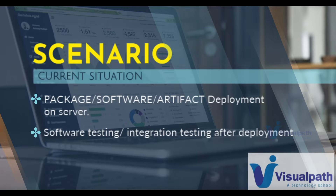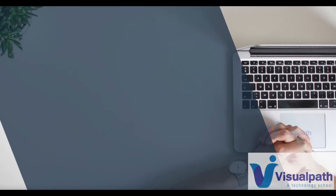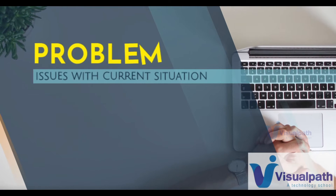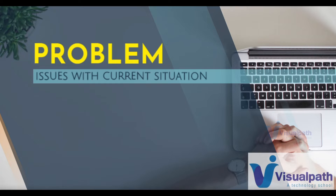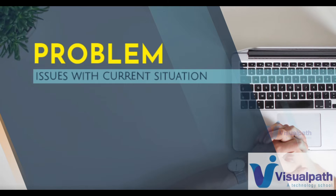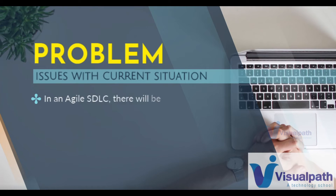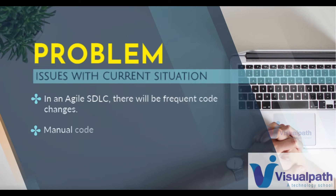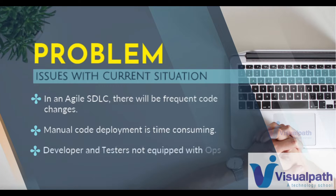Now I think you should have already understood the problem, but let's still talk about it. We're talking about today's age developer — they're fast, they're quick, they're going to make continuous code changes. And if the code deployment process is manual, it will be time consuming. Plus developers and testers here are not equipped with ops knowledge. We don't have an operations team, or we have a very small one. But anyways, these things need to be done. So what can they do?